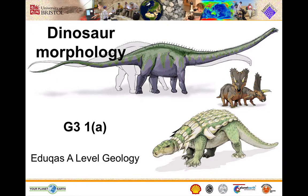This video is all about the different types of dinosaurs that we can find in the fossil record, and how we can identify them on the basis of what we call their morphology — the shape or the form of the bones that we find.